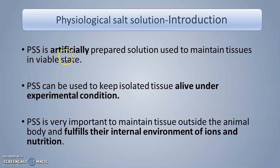PSS is an artificially prepared solution used to maintain a tissue in a viable state. It can be used to keep isolated tissue alive under experimental conditions. PSS is very important to maintain tissue outside the animal body and fulfill the internal environment of ions and nutrients — meaning for in vitro studies using isolated tissue preparations, PSS provides externally the ions and nutrients so that the tissue remains viable for the maximum period of time.